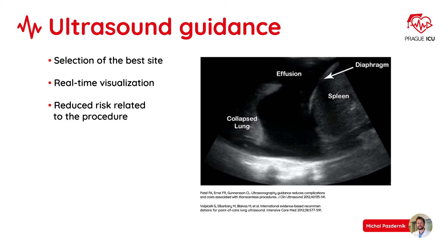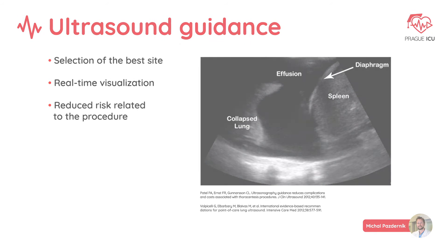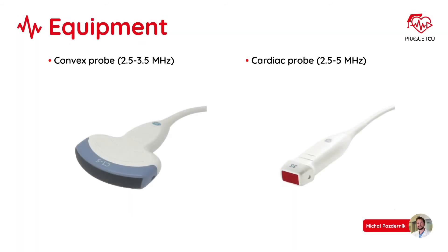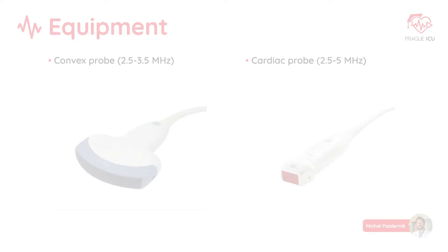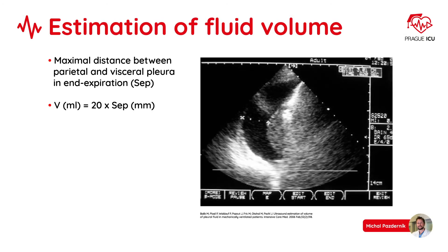Always use ultrasound for proper guidance. It will help you with the selection of the best site, will give you real-time visualization and will therefore reduce the risk related to the procedure. You can estimate fluid volume using the simple formula: 20 times the maximal distance between parietal and visceral pleura in end expiration.